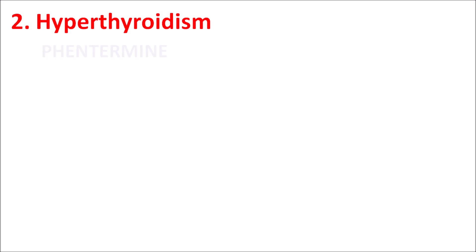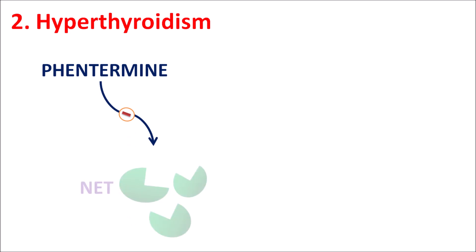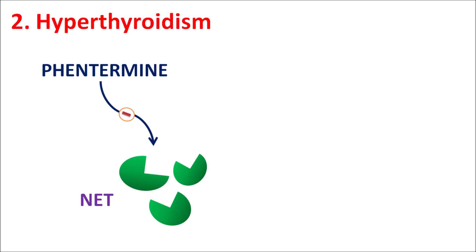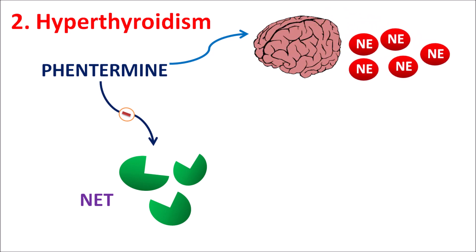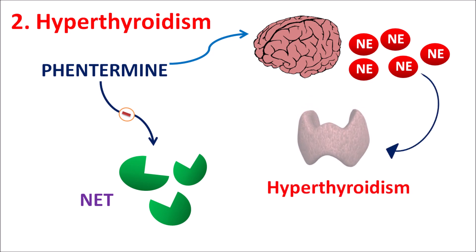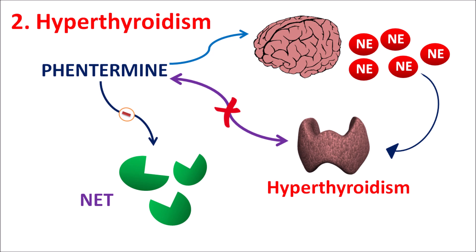The second condition is hyperthyroidism. Phentermine blocks the norepinephrine transporter on presynaptic nerve terminals within the hypothalamus, resulting in increased sympathetic activation in the CNS and increased release of norepinephrine. Elevated norepinephrine levels can affect the thyroid gland, resulting in hyperthyroidism. If a patient already has hyperthyroidism, phentermine should not be used and is strictly contraindicated. Thyroid function should be assessed before initiating therapy.